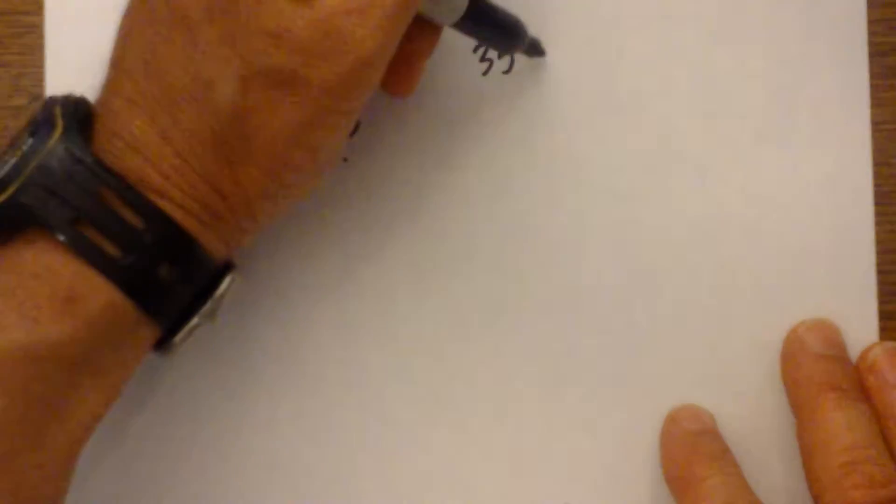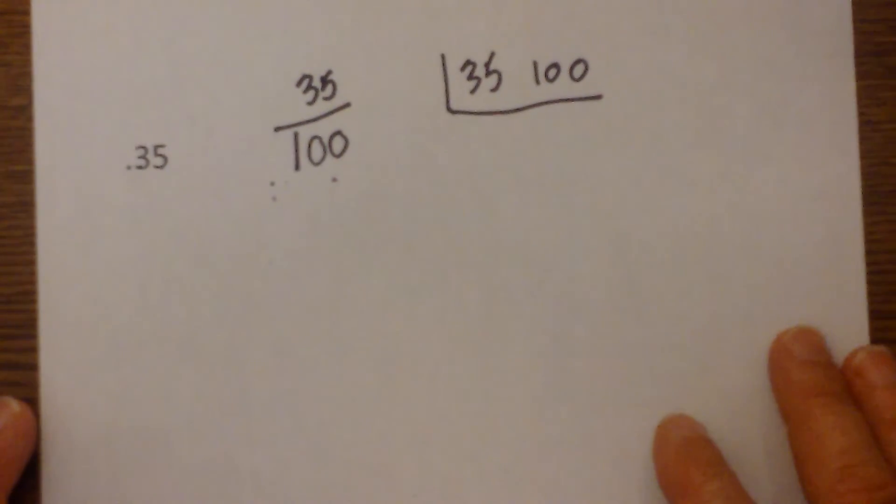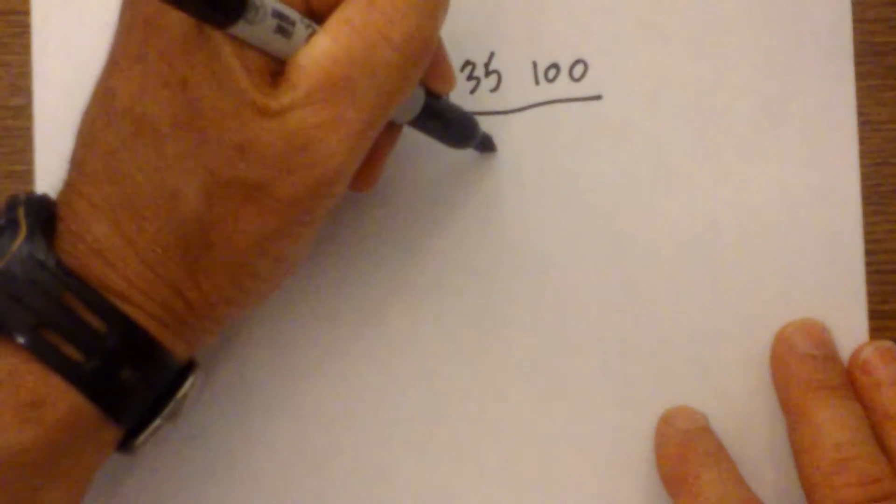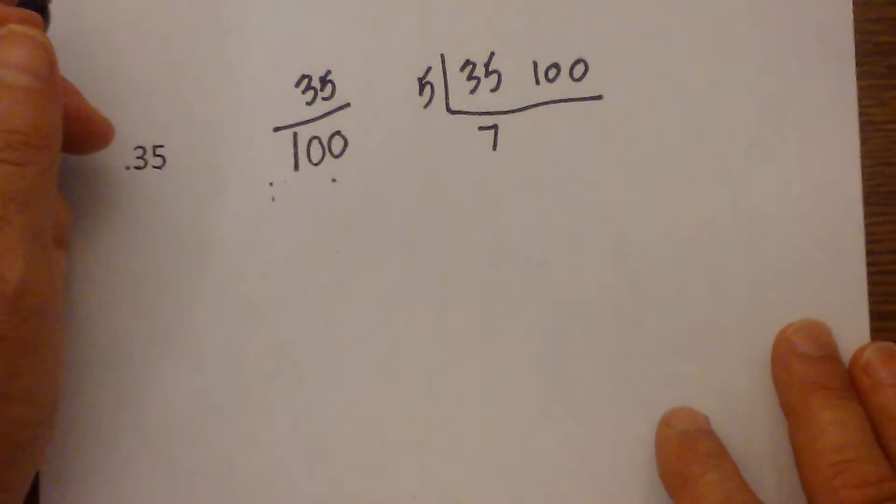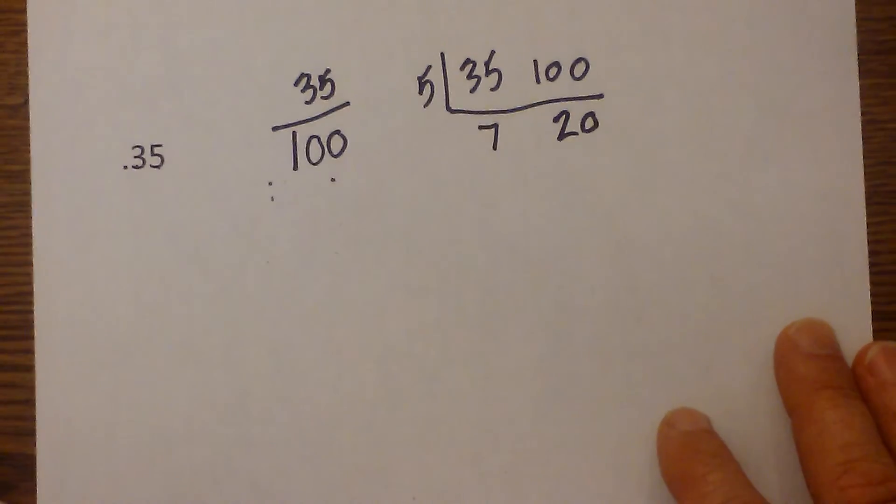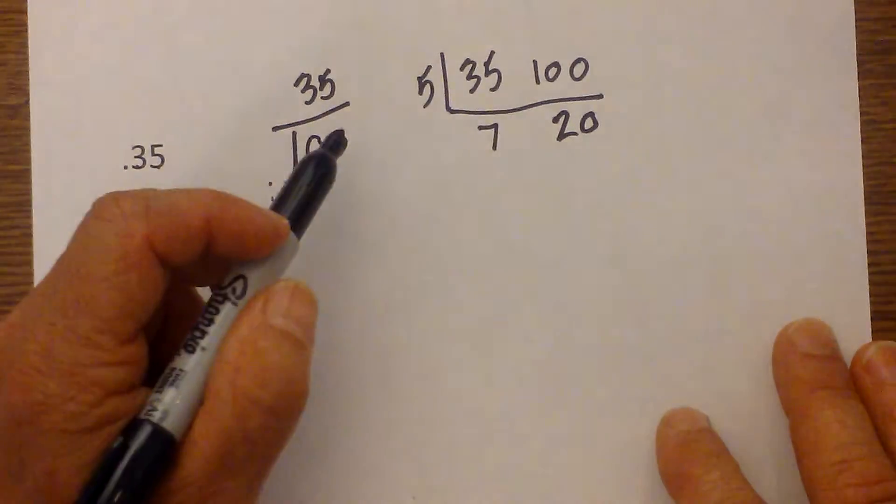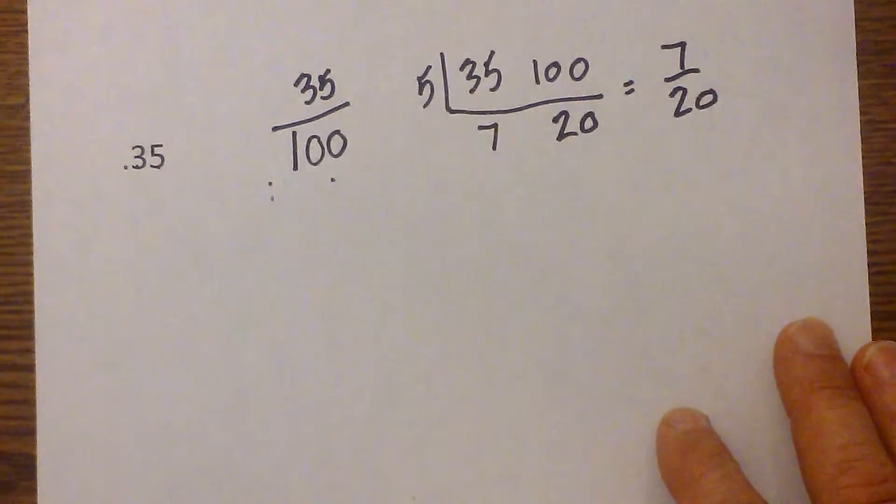I then need to simplify. I'm going to write 35 and 100 next to each other. In this particular example, I know that five will go into it, so I put five on the outside. Five goes into 35 seven times, and five goes into 100 twenty times. At this point, seven will not go into twenty. Seven is prime, so the fraction is seven twentieths.